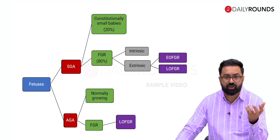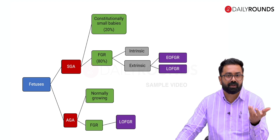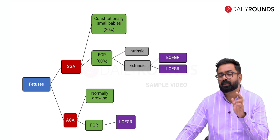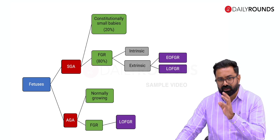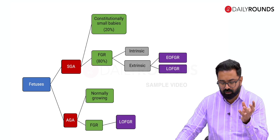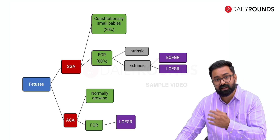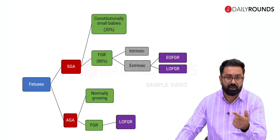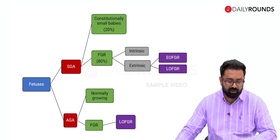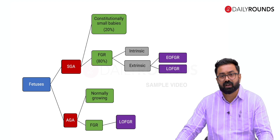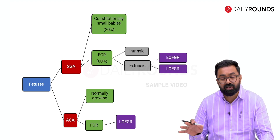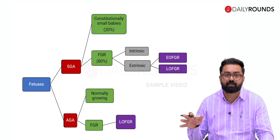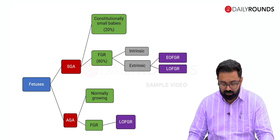In early onset FGR, a large share of the placenta is abnormal — more than 30 percent of the placenta being abnormal produces an abnormality in umbilical artery Doppler. But in an AGA baby, the placenta is not so severely affected, though some portion is still not functioning well. The umbilical artery could be normal, onset of FGR would be late, and you would rely heavily on other criteria: fall in growth centile, CPR, MCA, or uterine arteries. In the AGA group, FGR would be diagnosed by an abnormal fall in growth centiles of more than 50 centiles plus an abnormal CPR or MCA.